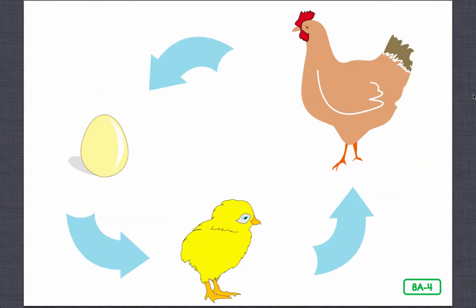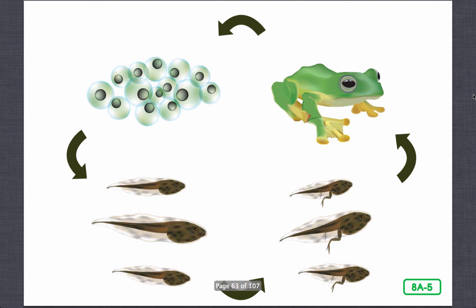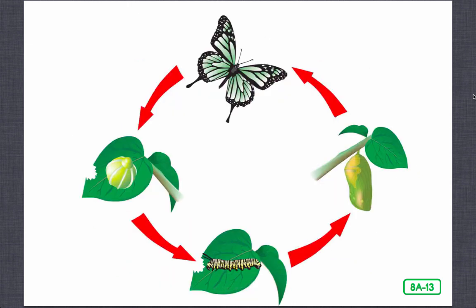This is the life cycle of a chicken. Tell me about this life cycle. This is the life cycle of a frog. Tell me about this life cycle. Here's the life cycle of a butterfly. Please describe this for me.